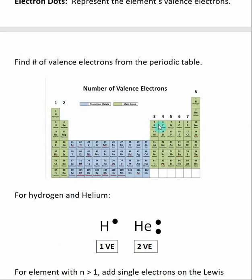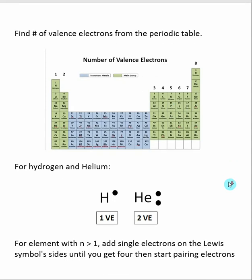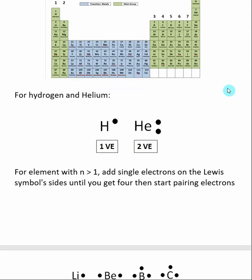Then we jump over the transition metals and continue. Boron's got three, carbon's got four, and anything inside of this whole column has the same number of valence electrons. Phosphorus has five, sulfur has six, and continuing on. Eight is what we're looking for.